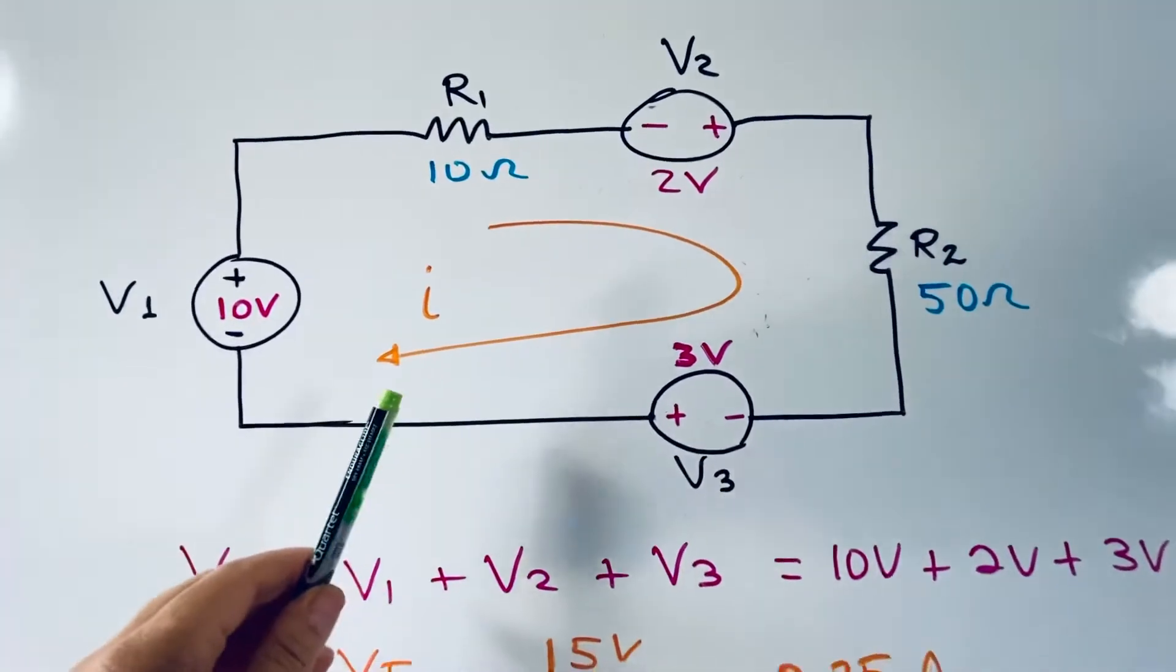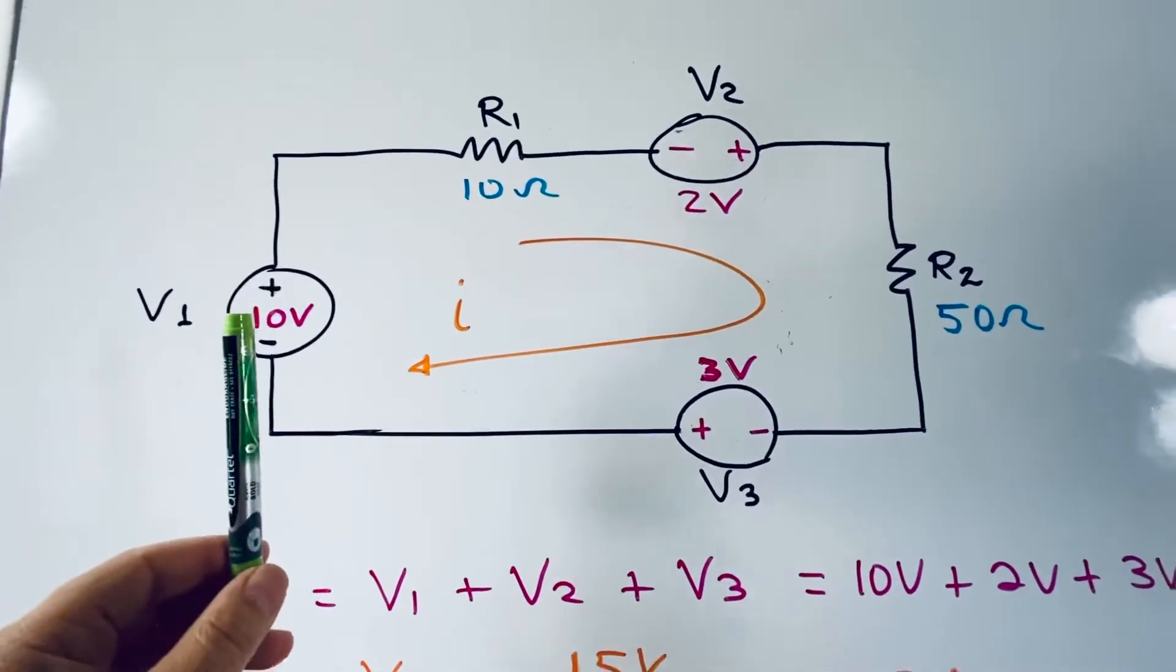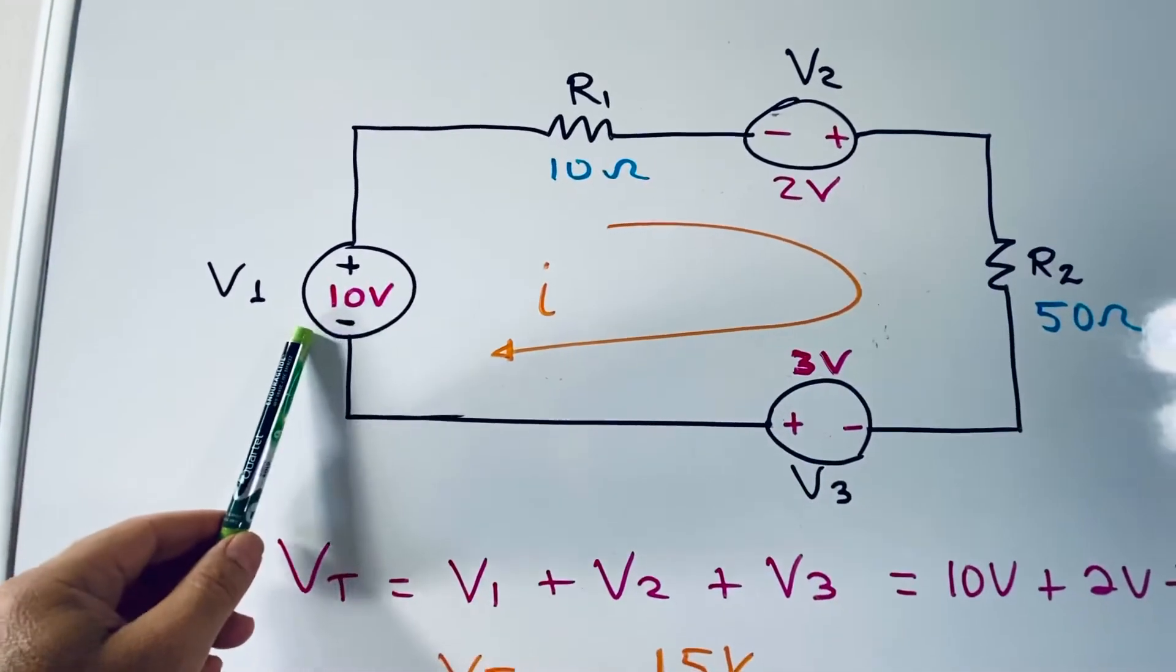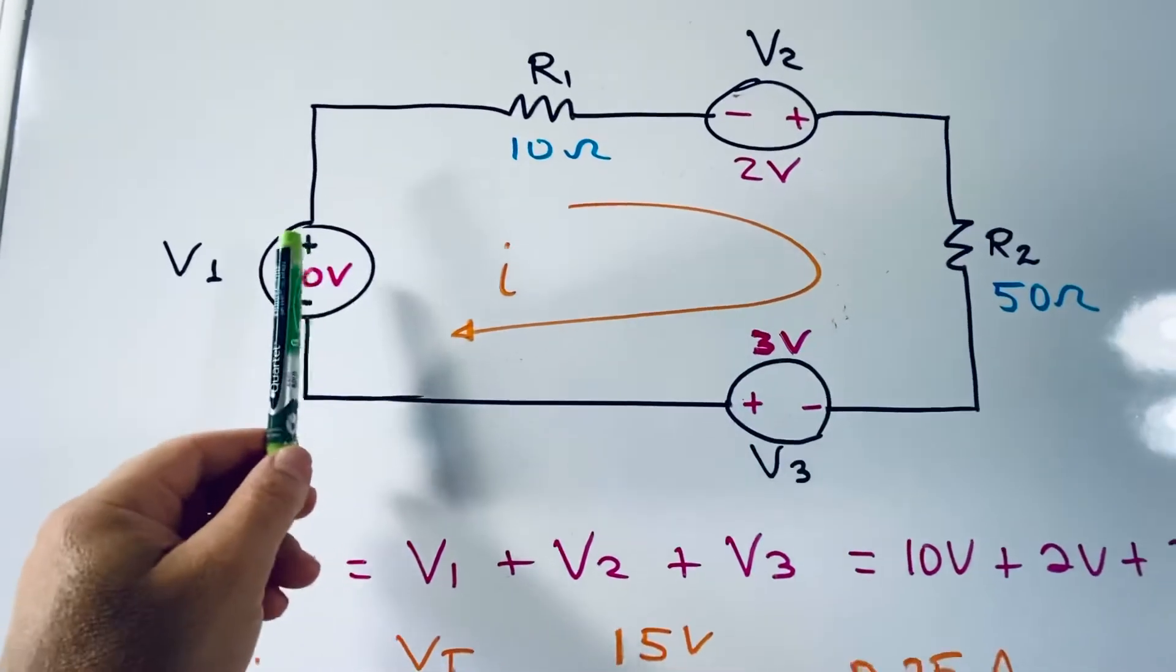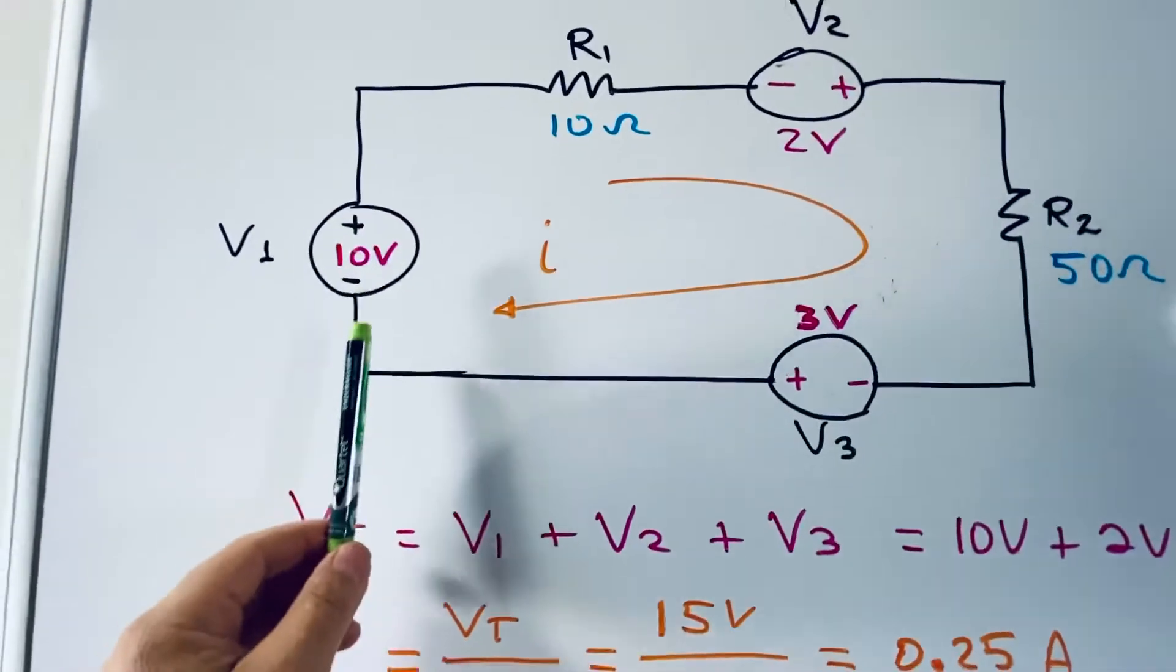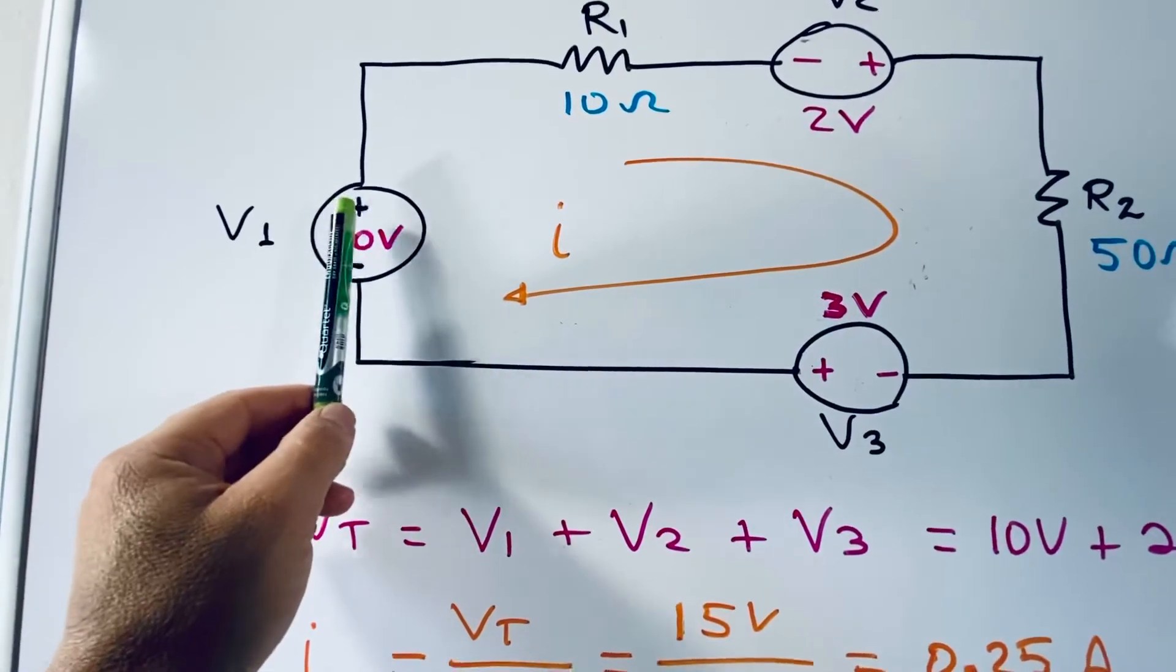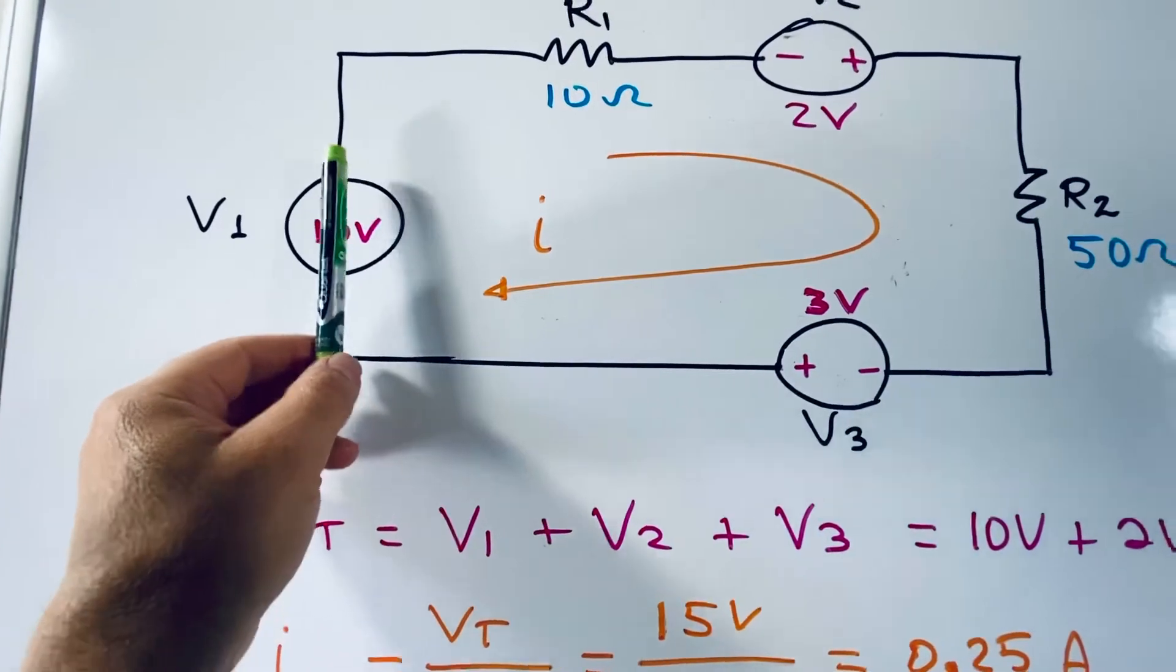Okay, now let's see the case when we have three power supplies but with different polarity. So look at this. You have 10 volts negative positive. The 10 volts is considered positive because when you go this way, the positive sign is on the top, so you leave with a positive sign. Then you go here.